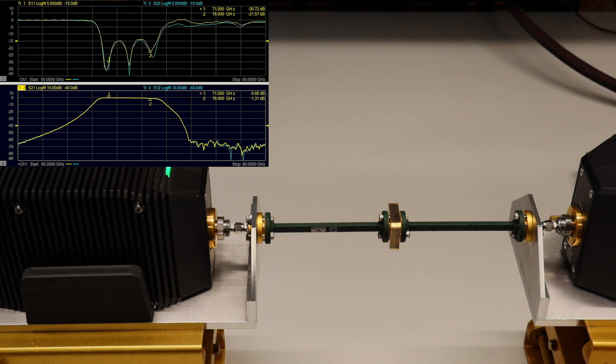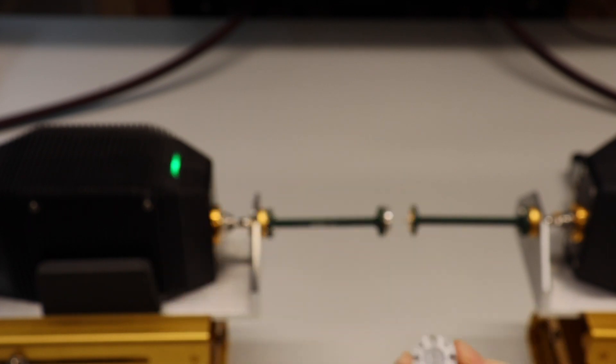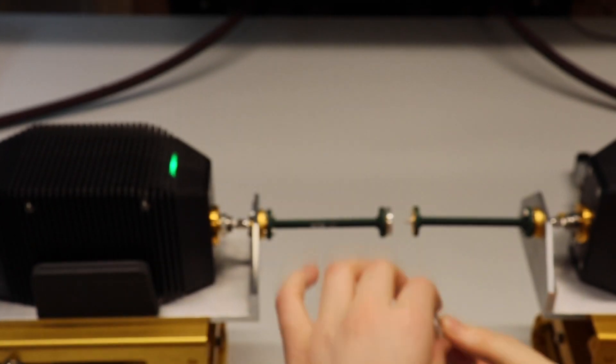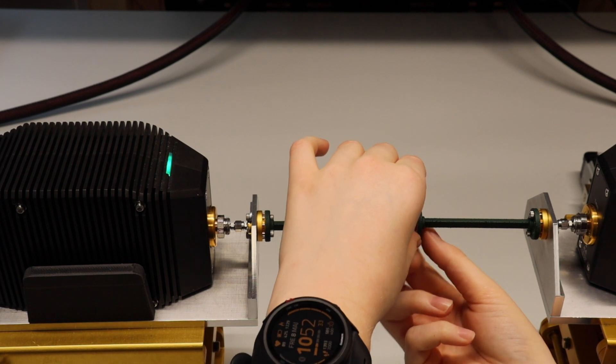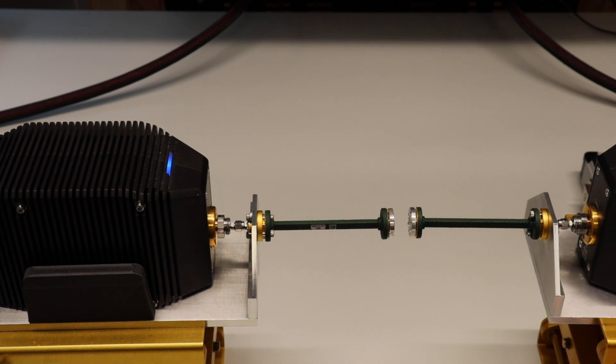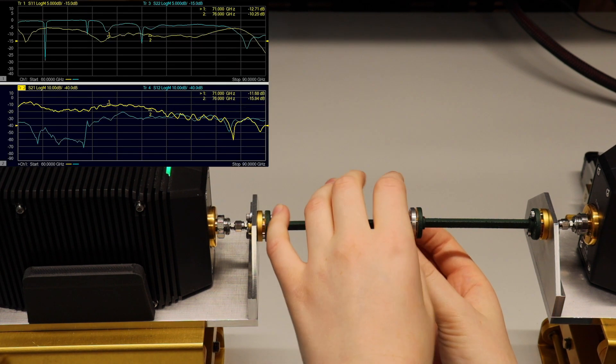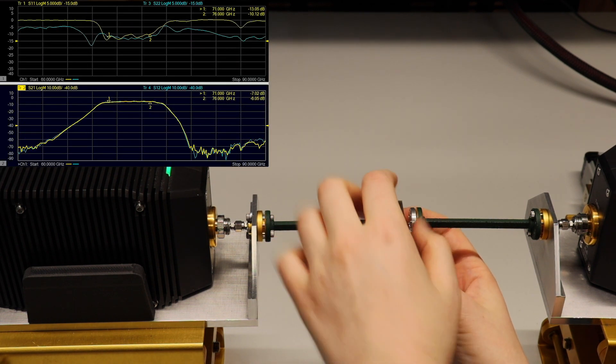We should of course use gap waves flange adapters for E-band frequencies. By attaching the flanges to the waveguides, there is no need for screwing or even pressing the waveguides together. When measuring the filter, the performance is as good as ever.